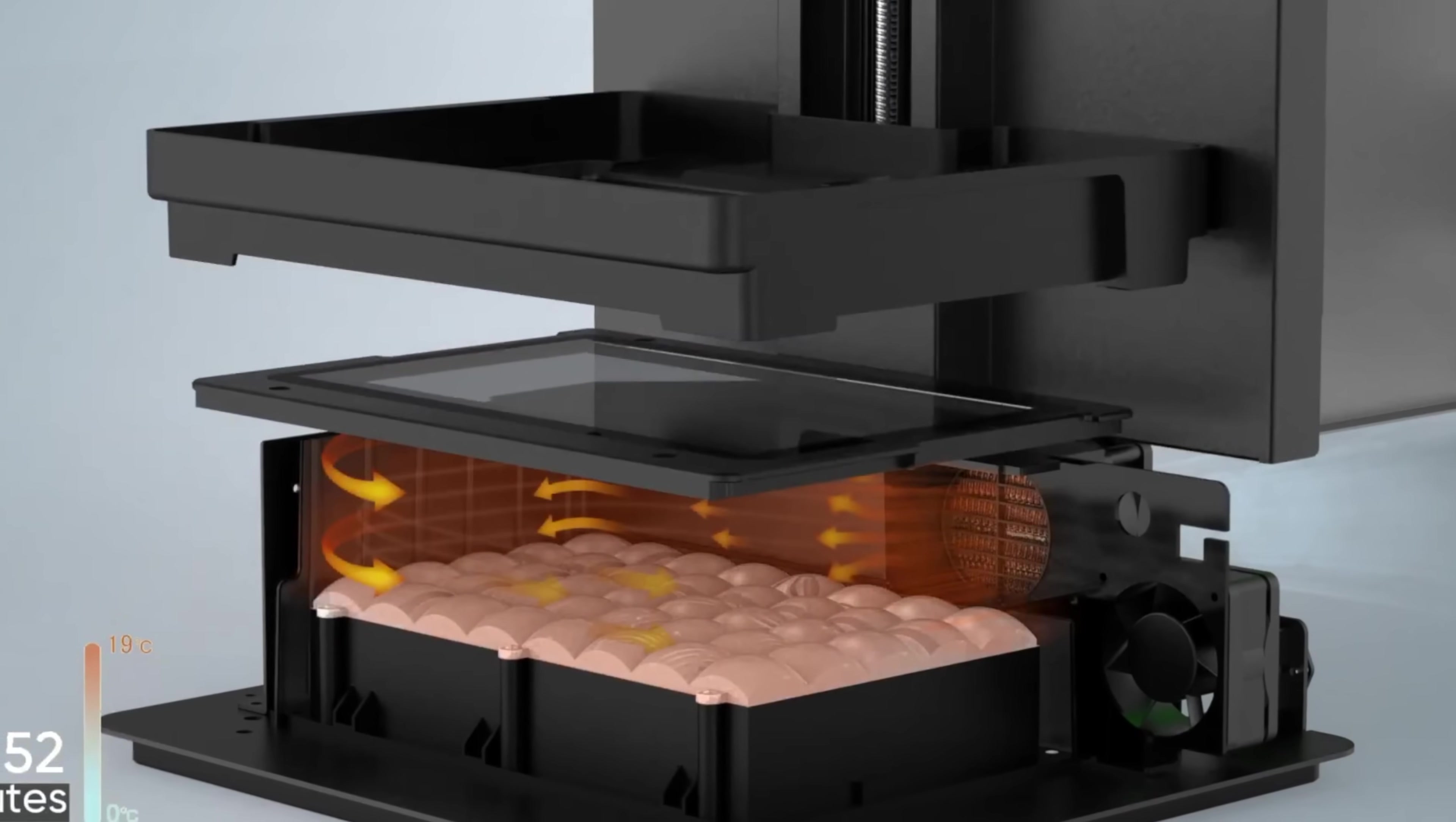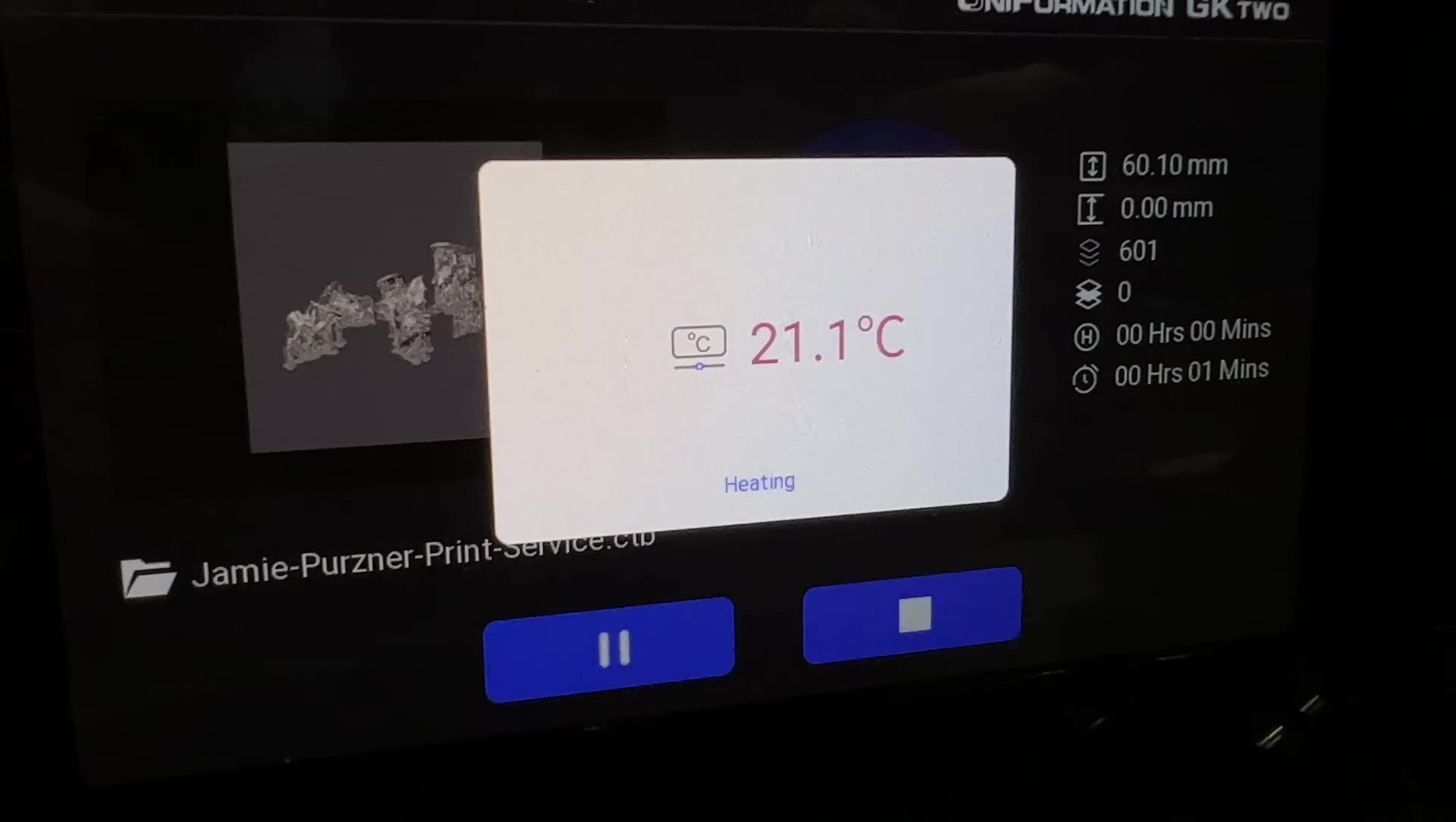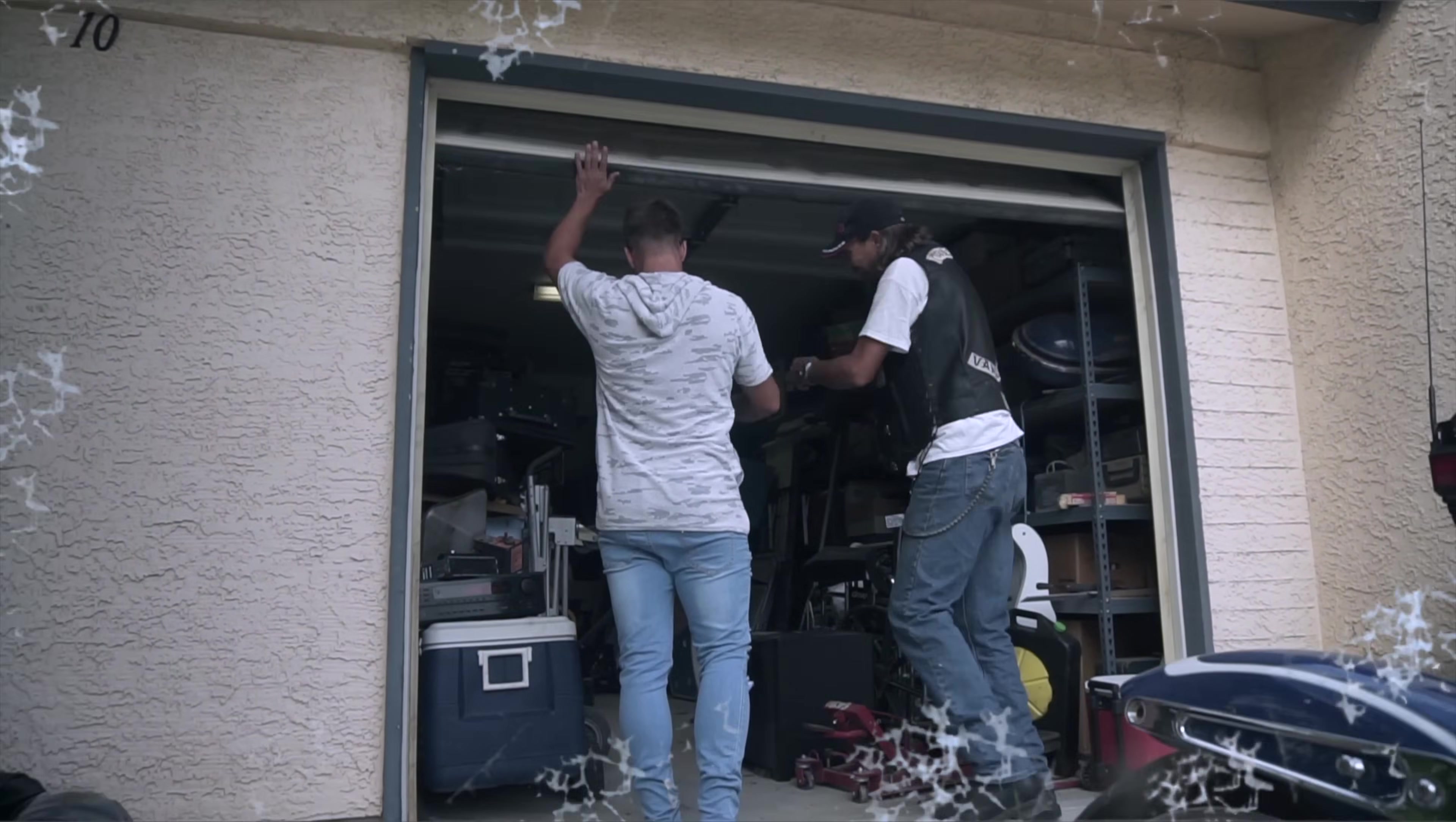If you're not aware, the curing behavior of 3D printing resin is temperature-dependent. At lower temperatures, the exposure time needs to be longer in order to properly cure the resin. If the ambient temperatures are too low, the curing may be insufficient, resulting in failed prints. The vat heater inside the GK2 will kick on whenever the temperature is too low, warming it to a comfortable 25 degrees Celsius. This makes the GK2 viable for use in the garage, even in cool climates.